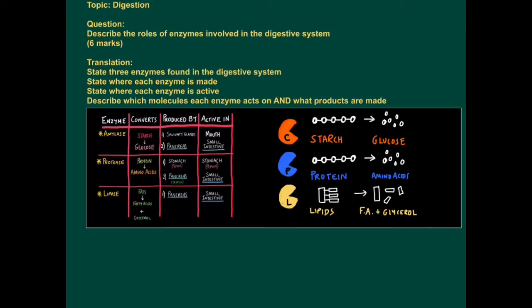So there are three types of enzymes in the digestive system. You just have to say what they do and where you'd find them, where they're active. So state three enzymes found in the digestive system, state where each enzyme is made, state where each enzyme is active, and describe which molecule each enzyme acts on and what products are made.